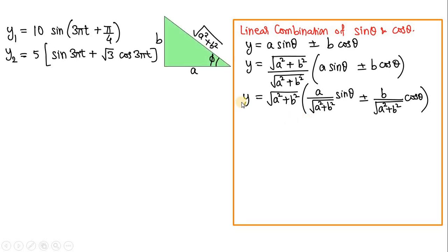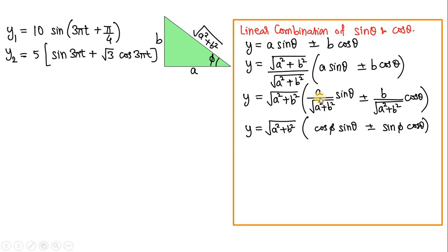Next, we imagine a right triangle with a base angle φ, where the base is A and the height is B, so the hypotenuse becomes √(A²+B²). From this triangle, A/√(A²+B²) is cos φ (base over hypotenuse), and B/√(A²+B²) is sin φ (opposite over hypotenuse). So we replace the first ratio with cos φ and the second with sin φ.